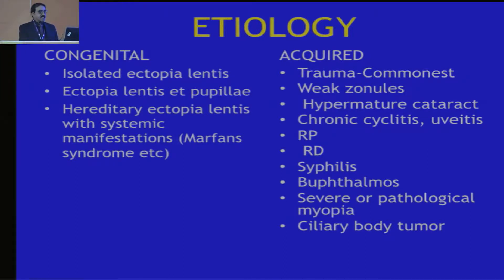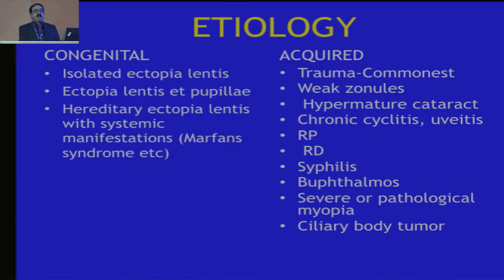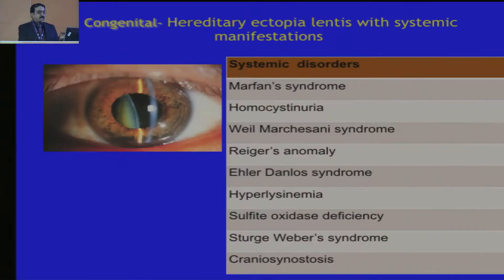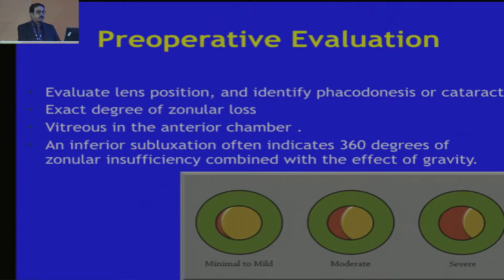Etiology — we know all these congenital etiologies and acquired etiologies, all these conditions in which we may have subluxated lenses. These cataracts deserve special attention and special aspects to deal with them so that we get a good outcome. The systemic disorders are there, and I highlight this because we need to care not only for the eyes but refer them to the respective systemic pathologies so that they get full treatment.